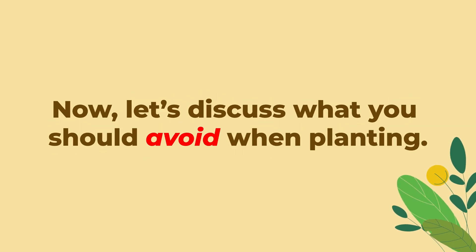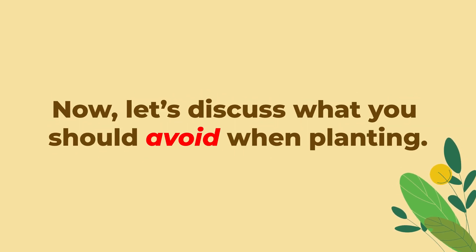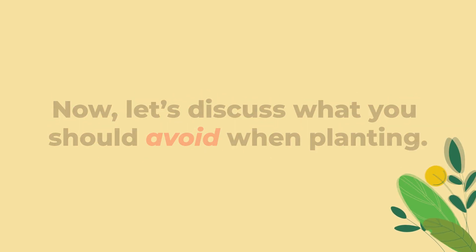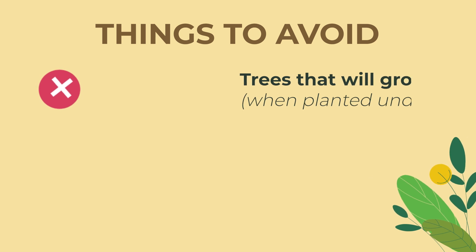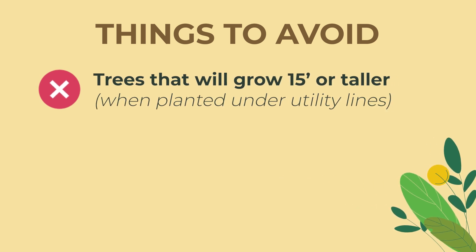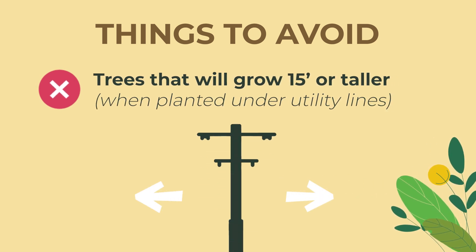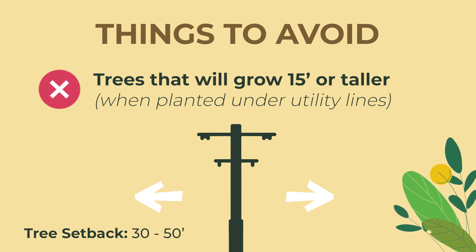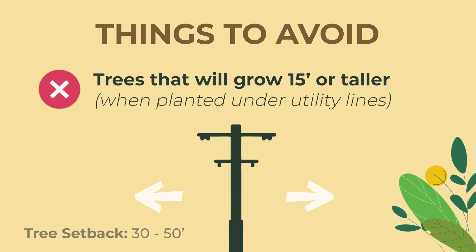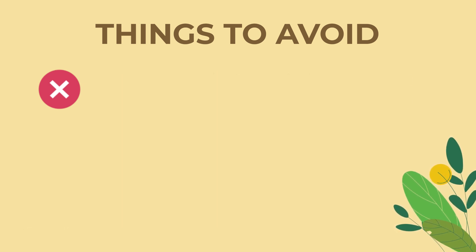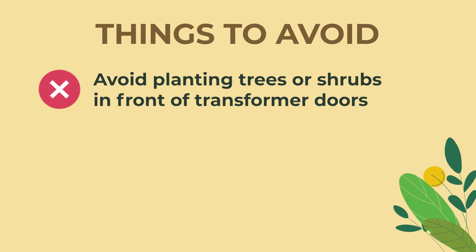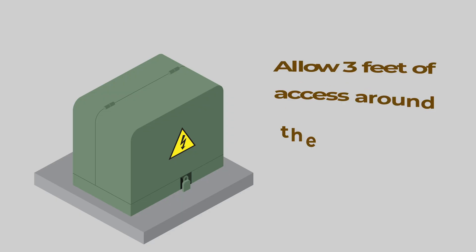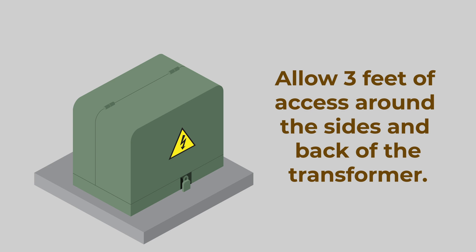Let's talk about some things we need to avoid when planting a tree. Avoid planting any trees that will grow taller than 15 feet below utility lines. Make sure to set back your tree 30 to 50 feet if the planting site is close to overhead power lines. If you're planting near underground utility boxes or transformers, avoid planting trees or shrubs in front of the transformer's door. Allow three feet of clearance around the sides and back for access by the utility company.